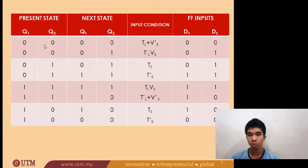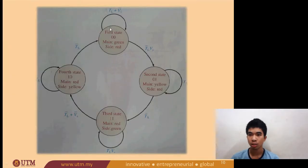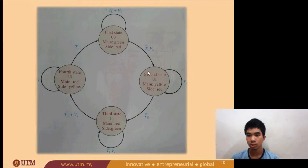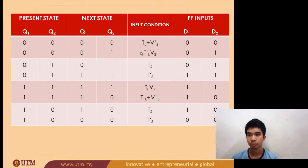Here we see state zero-zero. If it stays the same, the input condition is TL or VS. As you can see, if the state stays as zero-zero, the condition is TL or VS bar. On the other hand, if the state changes, the input condition will be TL bar and TS. It goes on the same concept for all six possibilities, and from there we can know what the inputs at the D flip-flops should be.